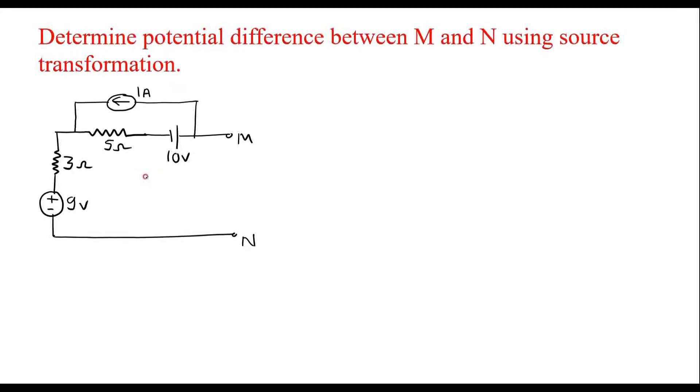Here we can observe that a 5 ohm resistor is in series with a 10 volt voltage source. If we convert this into a current source, then this current source will come in parallel with the existing one, so we can reduce the network further. The first step is to convert this voltage source which is in series with a resistor by applying source transformation.